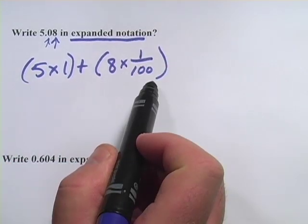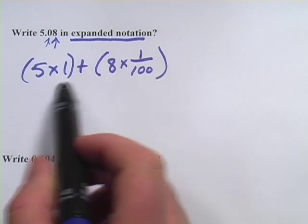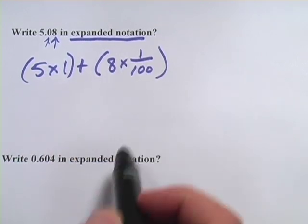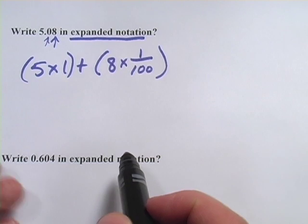And that would be expanded notation for 5.08. There's 5 and 8 one hundredths. Let's try another one.